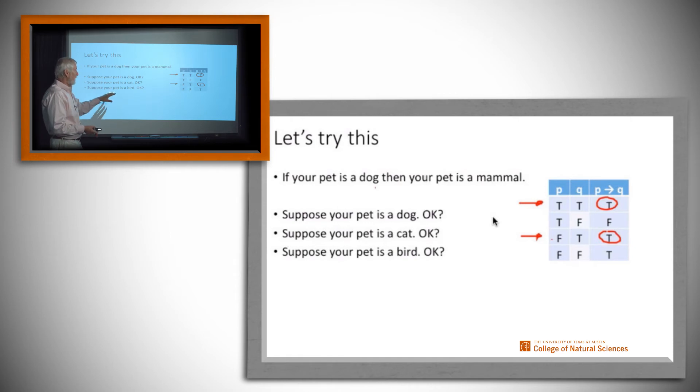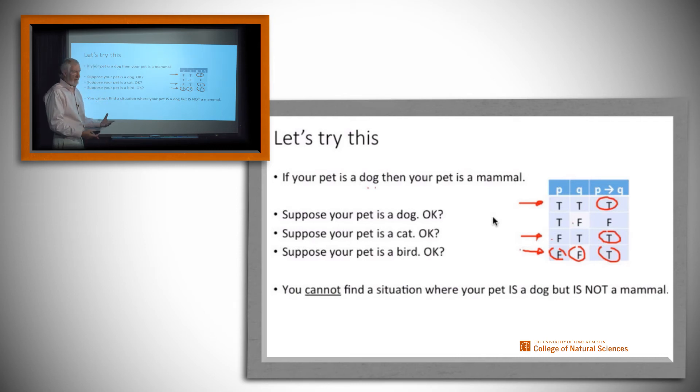What about this one? Your pet is a bird. Now we have that your pet is not a dog, but in fact since it's a bird it's not a mammal either. That's this situation right here where both antecedent and consequent are false, and we're going to say in that case as well that the truth value of the implication is true. Once again, the only case that we care about being false is when the antecedent is true and the consequent is false. We can't find a single situation, at least among these right here, where the pet is a dog but is not a mammal. So since we can't find that, we're going to consider that this statement right here is a true statement.